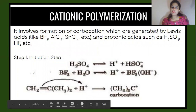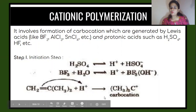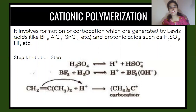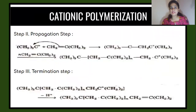Now this H+ will then be reacting with our monomeric units — in this case CH2=C(CH3OCH2). When it reacts, the double bond will break. The moment it breaks, CH2 becomes CH3, and we get C+ — a Carbocation has been formed. This Carbocation formed in the initiation step will then go on further for the propagation stage.